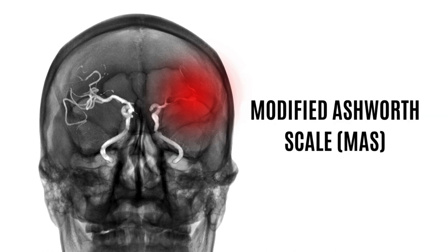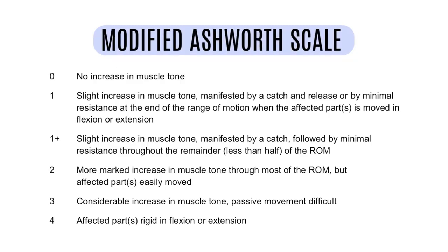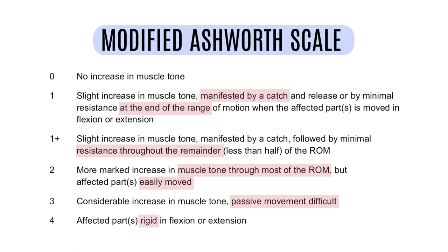Let's look at the modified Ashworth scale first, simply known as the MAS. For a score of zero, it's simply no muscle tone. For a score of one, there is a catch at the last bit of the range of motion. For a score of one plus, there is resistance that remains through the last one quarter of the range. For a score of two, there is resistance throughout most of the range of motion, however the limb is actually moved easily. For a score of three, passive movement is actually difficult. And lastly, for a score of four, the limb is rigid in either flexion or extension.